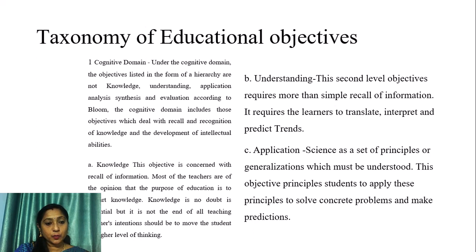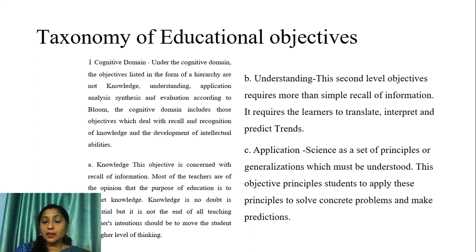The second level is understanding. This level requires more than simple recall of information; it requires learners to translate, interpret, and predict trends. Application is a set of principles or generalizations which must be understood; this objective requires students to apply these principles to solve concrete problems and make predictions.